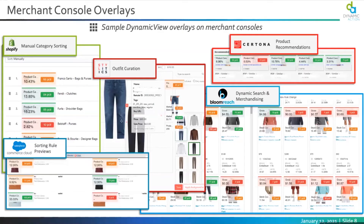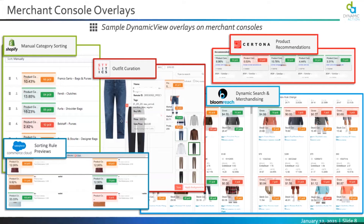That gives you a view of Dynamic View. Now I want to talk about how our forward-leaning customers are growing their investment from an AI standpoint. Taking operations from manual to automated, Dynamic Action is centrally fueling the management of 5, 10, or 20 different AI engines that retailers use today to address opportunities in merchandising, pricing, replenishment, and marketing.